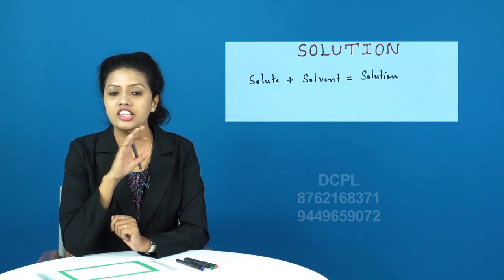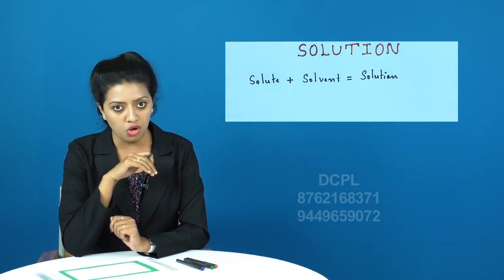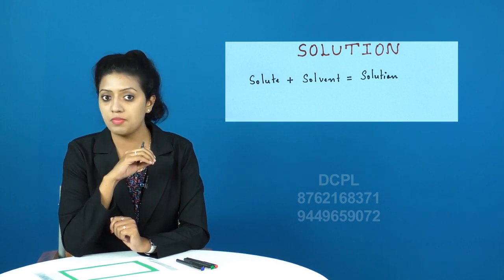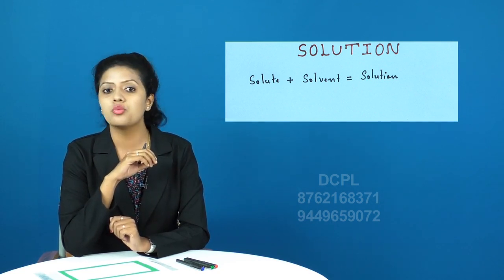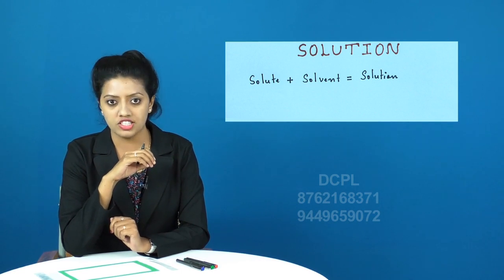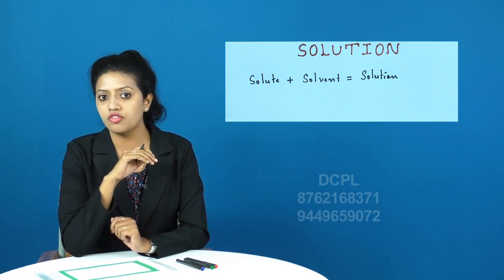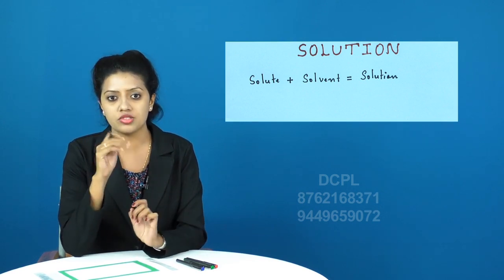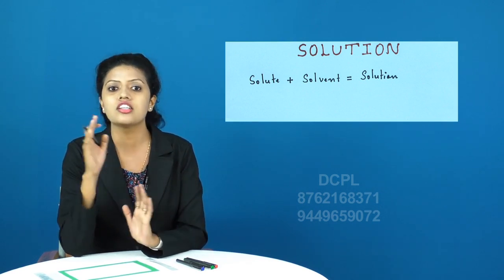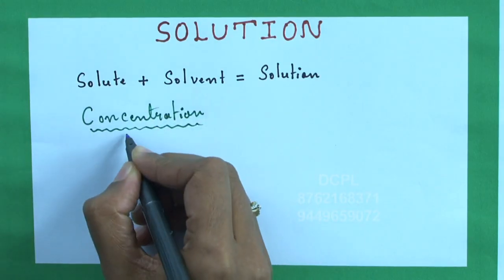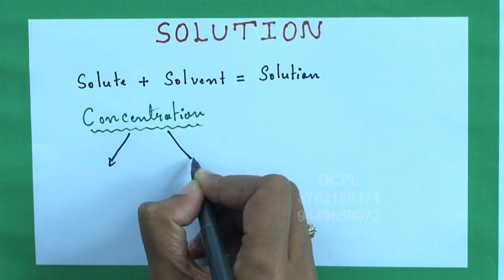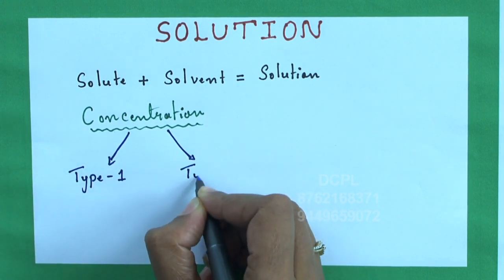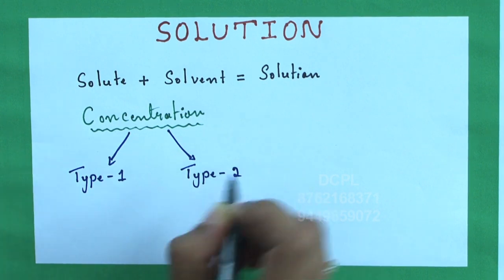However, in the case of solution of solid and liquid, no matter what is the quantity of the solid, liquid always forms the solvent. In order to find out the amount of solute present in a specific amount of solvent, we can find out through concentration. There are many expressions of concentration, so we will categorize them into two types: type 1 and type 2.